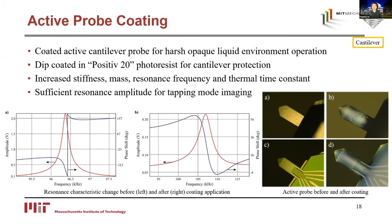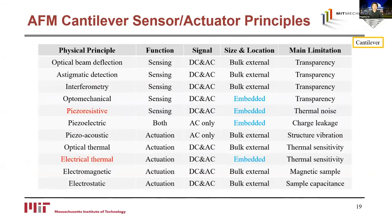There exist a number of other sensing and actuation methods for AFM micro-cantilevers using various physical principles. This table summarizes available methods based on function, signal type, size, location, and main limitation. For example, the active probe using piezoresistive sensing as well as thermo-mechanical actuation are both embedded methods but are subject to temperature sensitivity. These methods can be chosen depending on application needs. In summary, the development of cantilever probes and supporting systems enabled AFM imaging capability in chemically harsh opaque liquid environments.